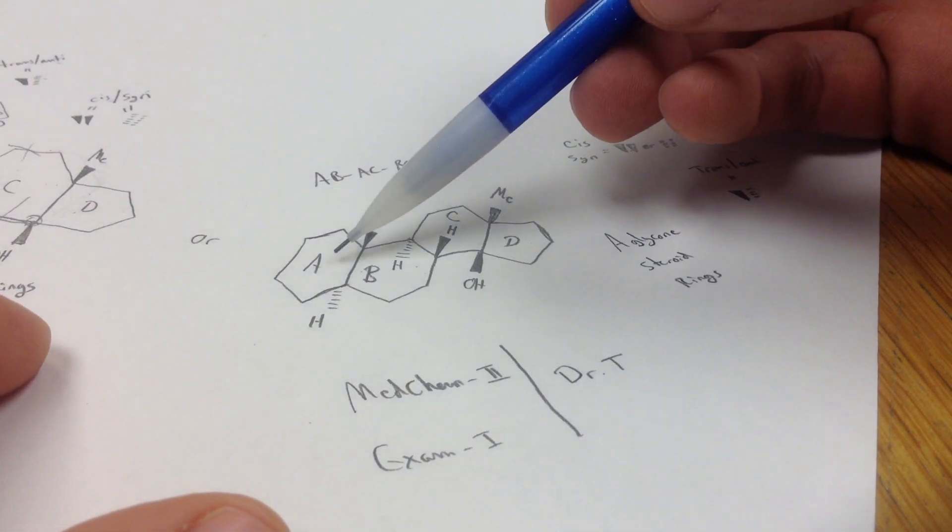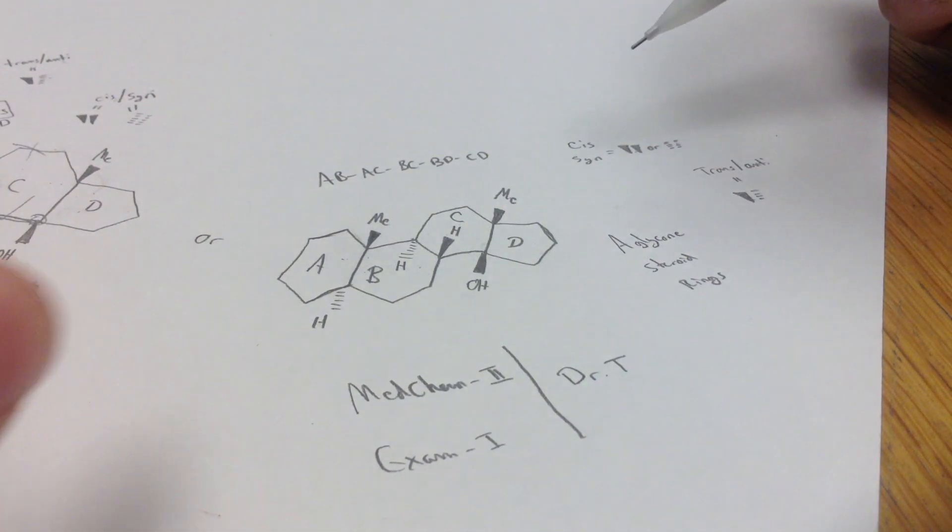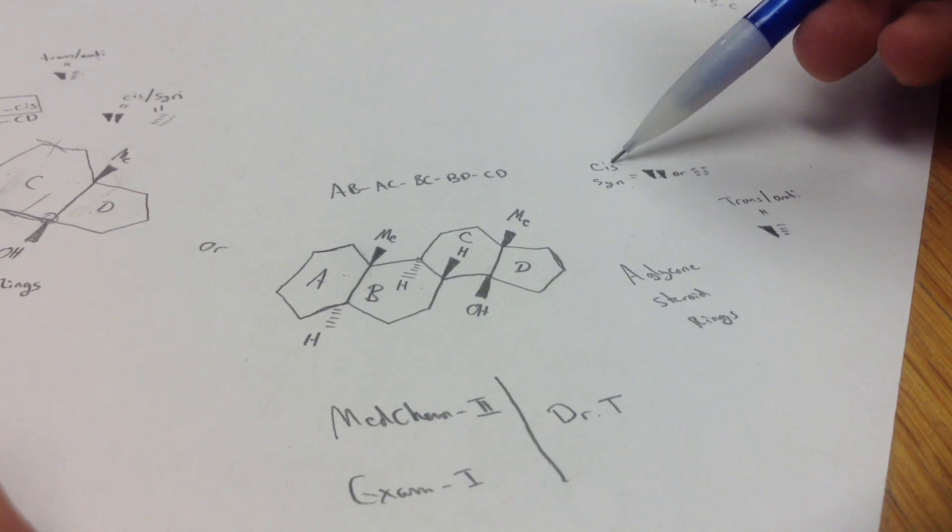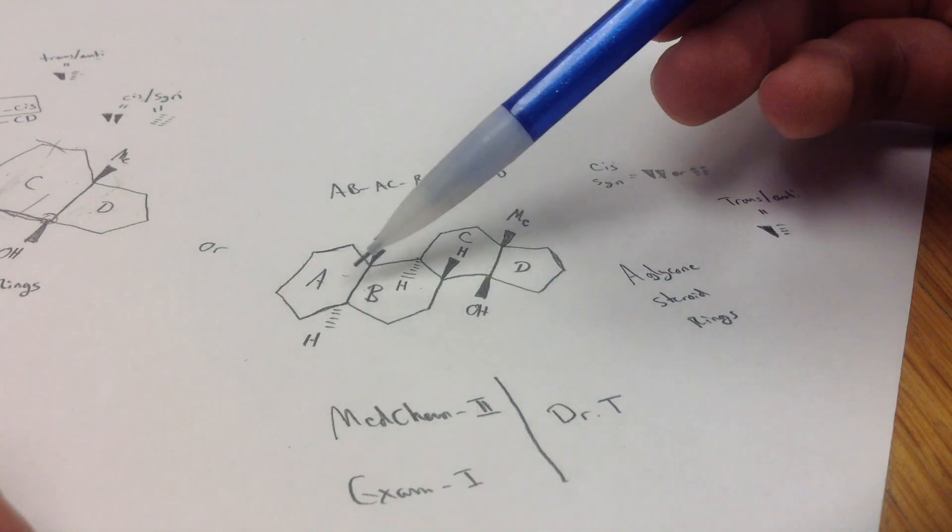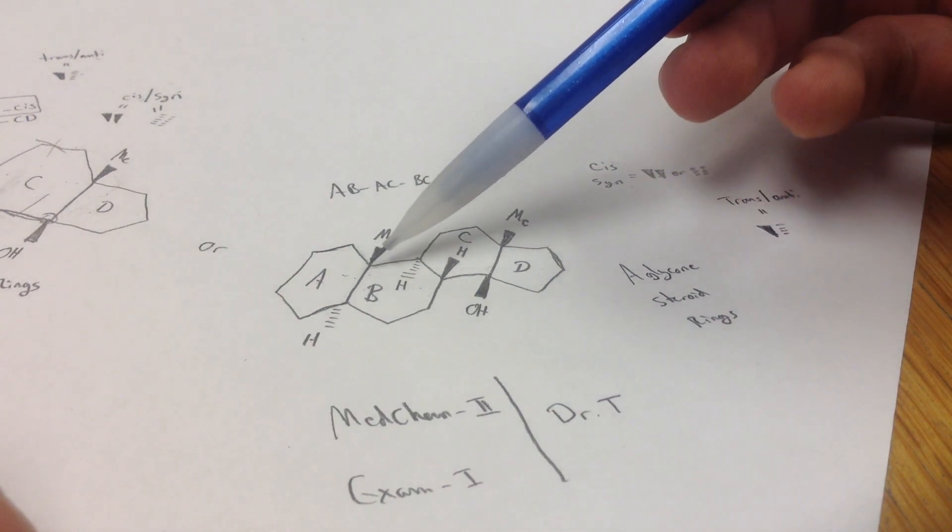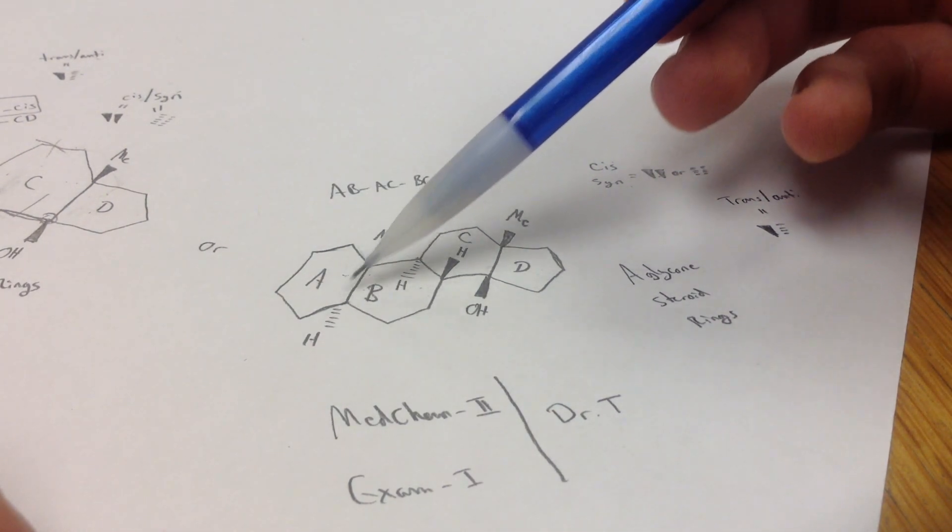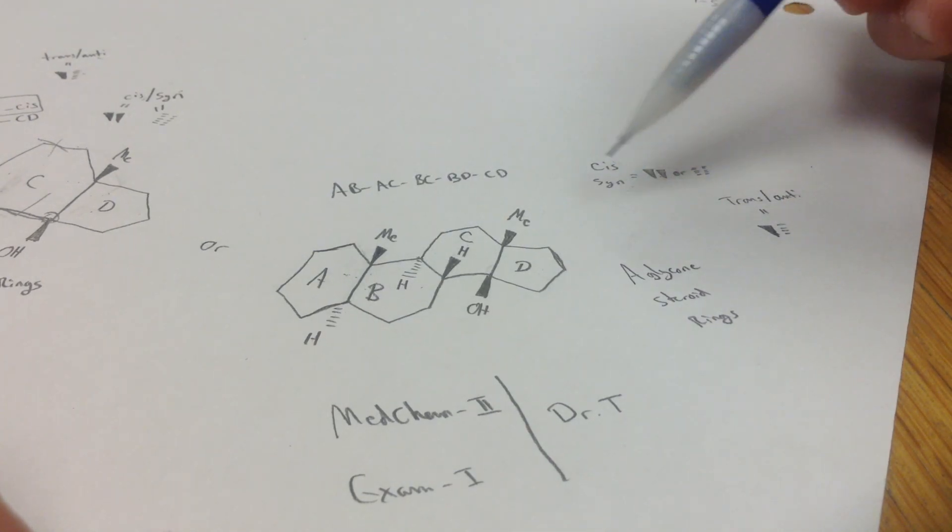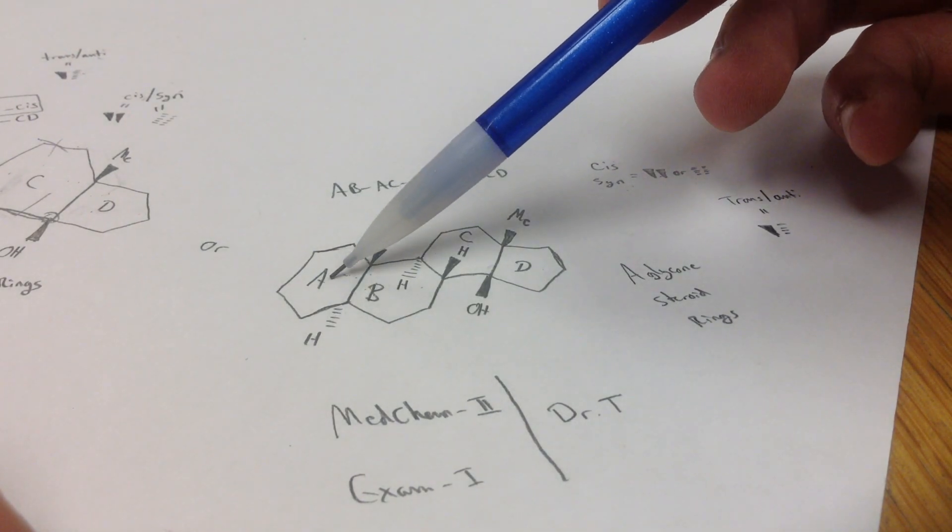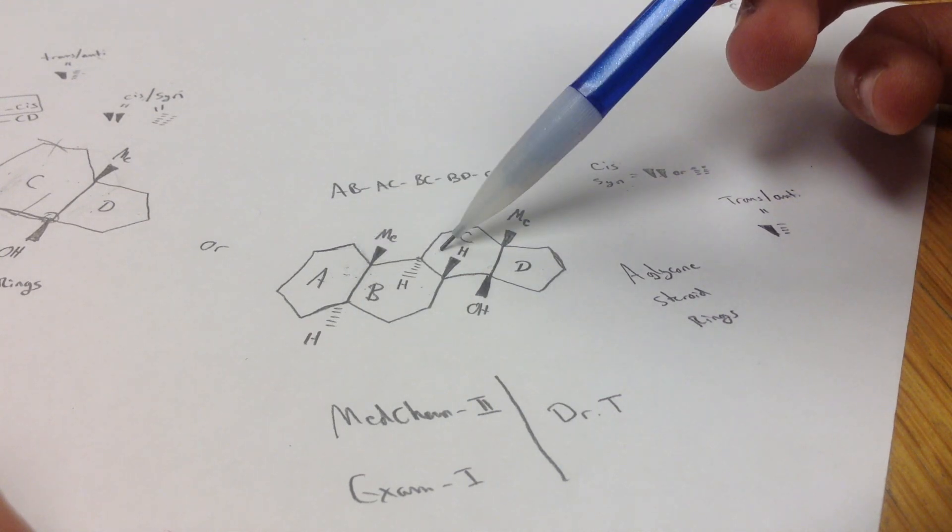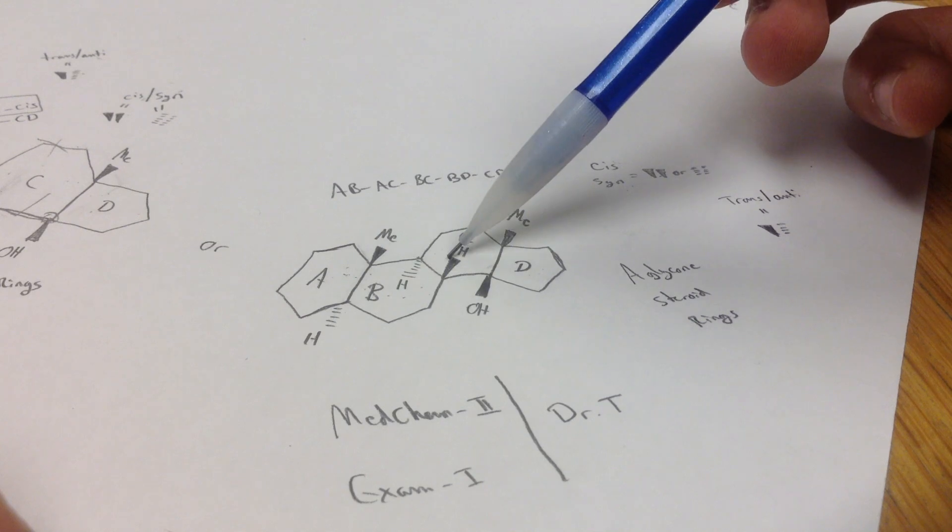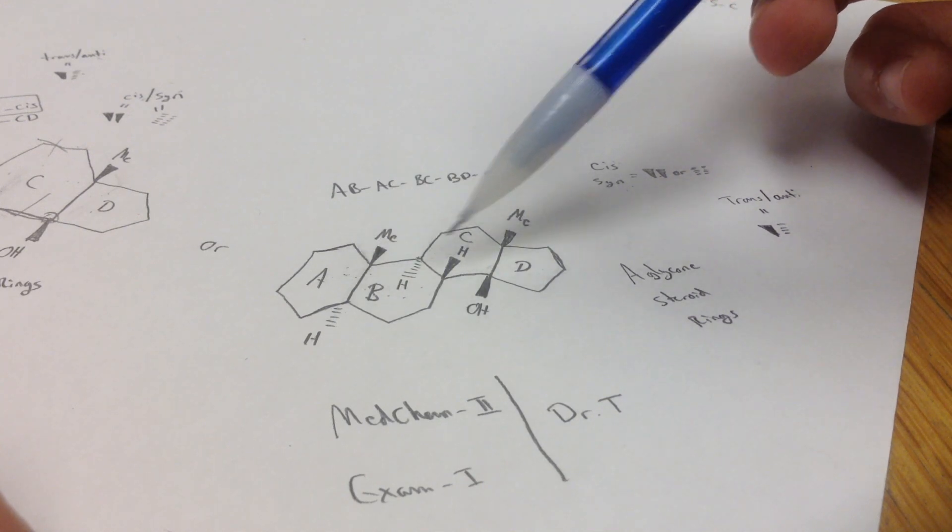So for A, B, there's a couple of choices here. I'll go over these. So cis or sin. So cis is when you have a connection between two rings like this, and there's bonding right here. Sin would be the same thing, but between A, say A and C, or B and D. So you have to skip one ring to have sin or anti.